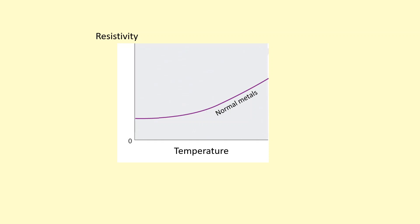This graph shows how the resistivity of metal changes with temperature, for example, copper. As you cool it down, the resistivity decreases to a fairly constant value.